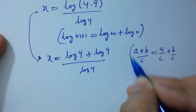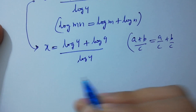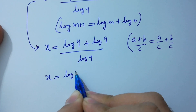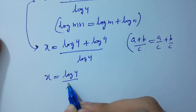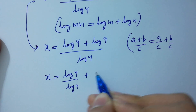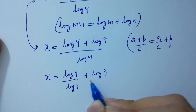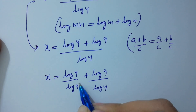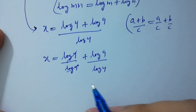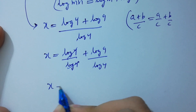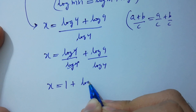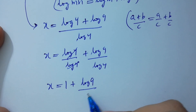So x equals log 4 over log 4 plus log 9 over log 4. Log 4 and log 4 will be cancelled, giving x equals 1 plus log 9 over log 4.